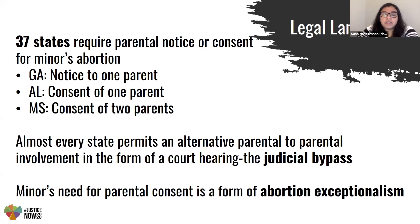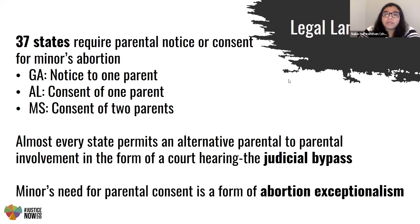From a layperson standpoint, this might seem like a routine requirement — it makes sense to involve a parent in this kind of decision making. But parental notification and consent laws actually create additional barriers to obtaining an abortion for a minor. In 21 states, parental involvement is required even if a minor is a victim of incest. Almost every state that has a parental notification or consent law also has a form of court involvement called a judicial bypass to bypass parental involvement, but that process is very unknown to minors and has a lot of loopholes to jump through.